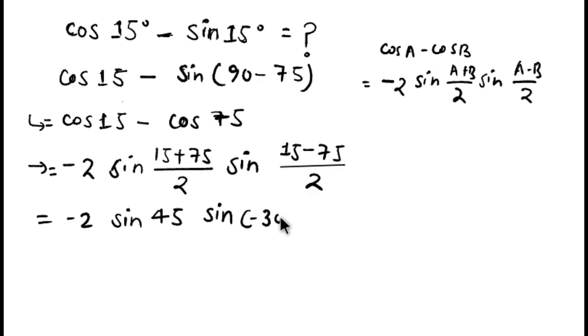And we know sin(-θ) equals -sin θ. So we can write it as -sin comes out, and minus times minus cancel out, so it remains as 2 sin 45° times sin 30°.